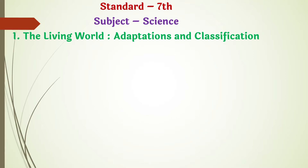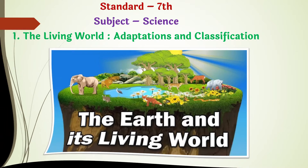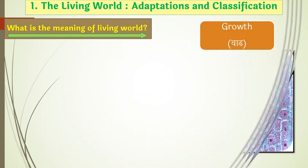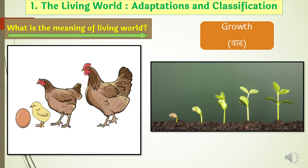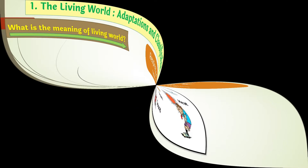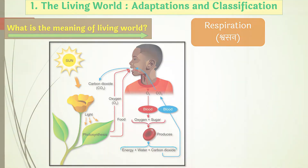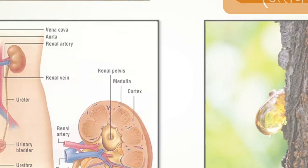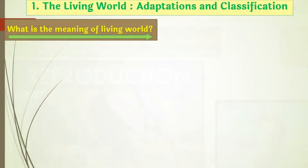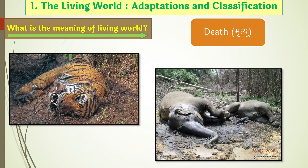The Living World: Adaptations and Classification. The things on the earth which have a cellular structure, which have growth, which can move from one place to another, which can give response to stimuli, which do respiration, do excretion, can produce things like themselves — which is called reproduction — and which have a definite life span, after which they will die.